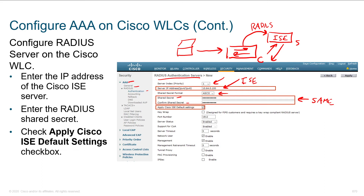Each side has to know about the other. Here we are within the wireless LAN controller pointing to ISE — this is the IP address of ISE, this is the password that's the same on both sides. When we send a message, it's going to have a checksum built using this shared secret, so we know it's actually coming from the right party. It's also used to encrypt the password. The rest of RADIUS you can see in clear text. Port 1812 is the newer one, but you might have a AAA server deployed a couple years ago that's on 1645.